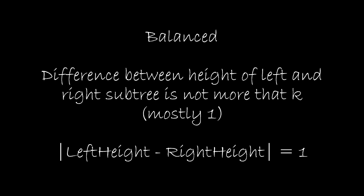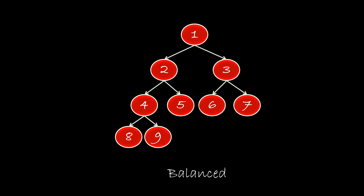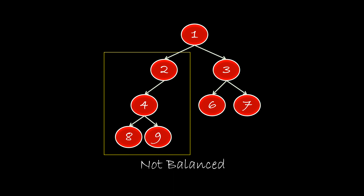So the absolute difference between the height of the left and right subtree for each node must be at maximum 1. For example, this is a balanced tree, but if we remove node 5 from it, it becomes unbalanced because the height of the right subtree for node 2 becomes 0 while that of the left is 2. The absolute difference becomes 2, which violates the property of a balanced binary tree.